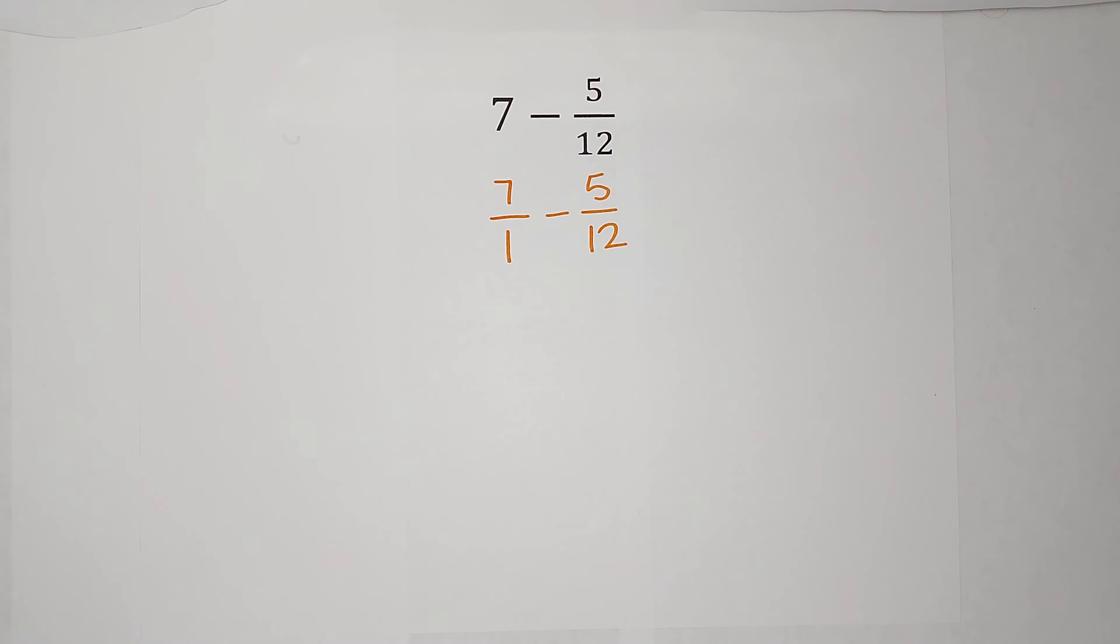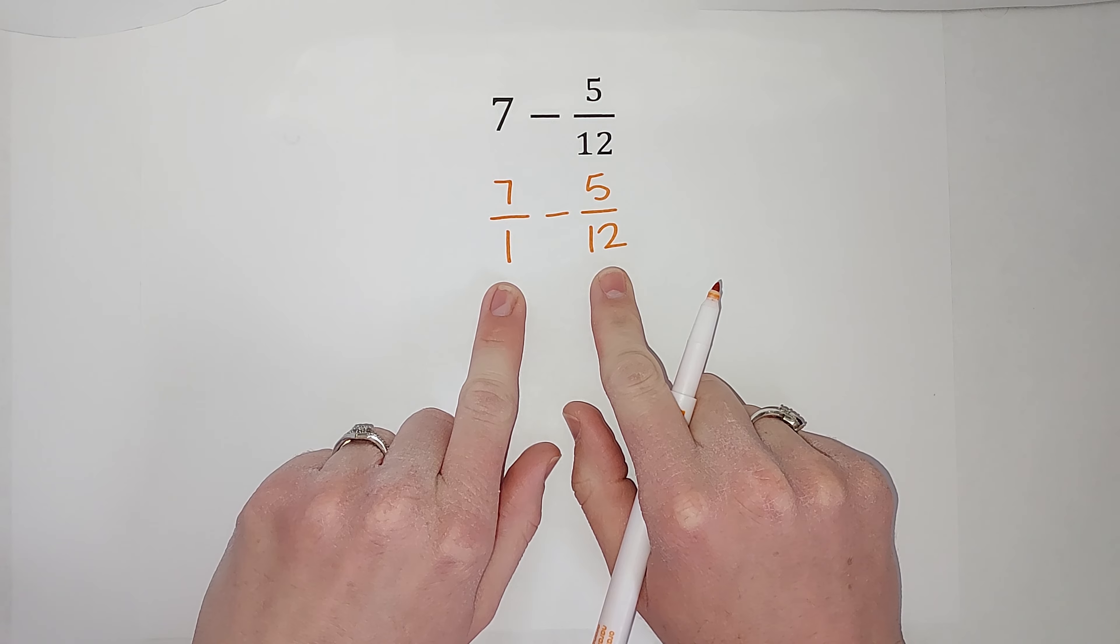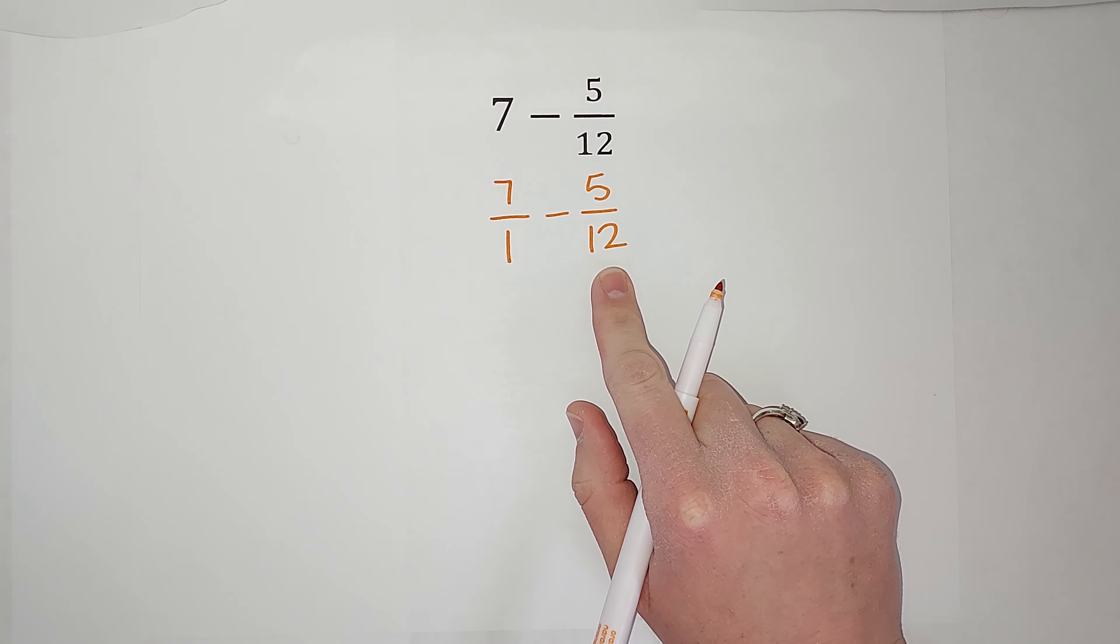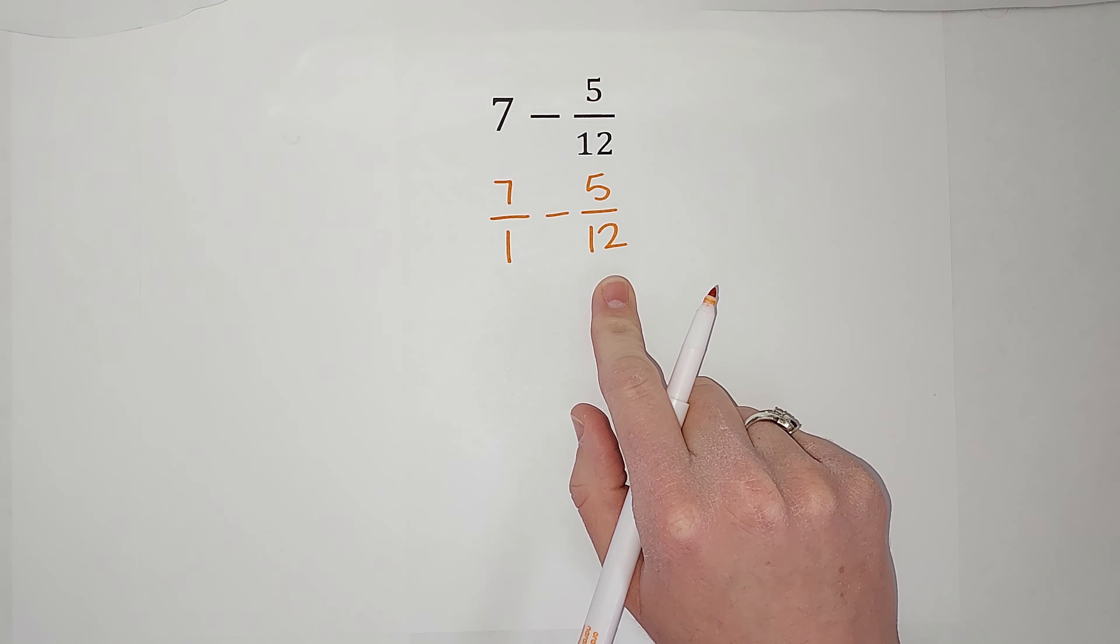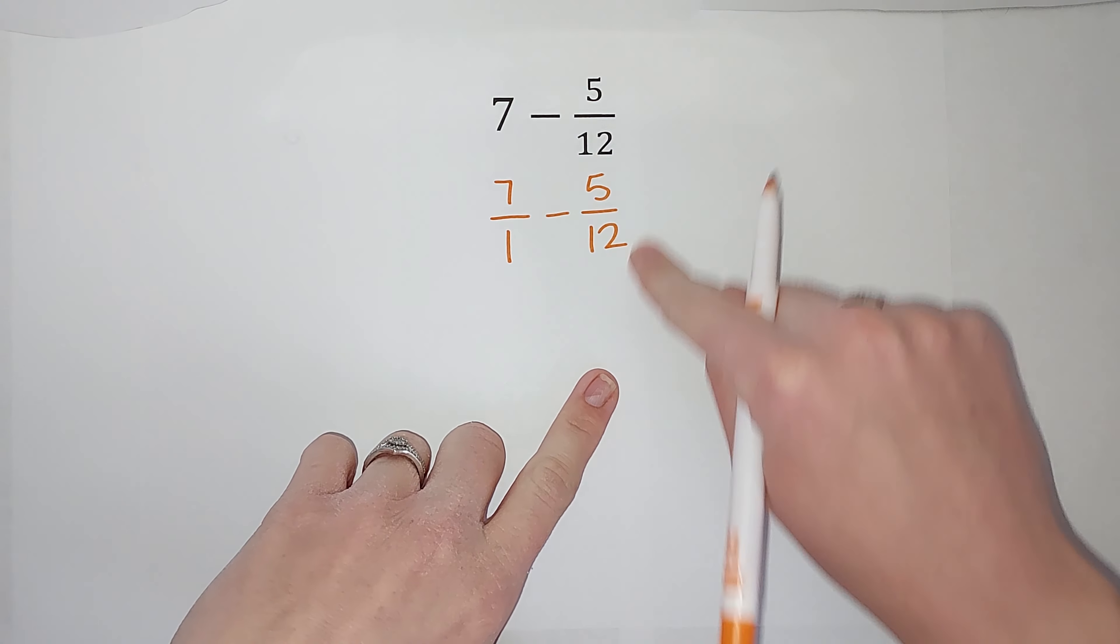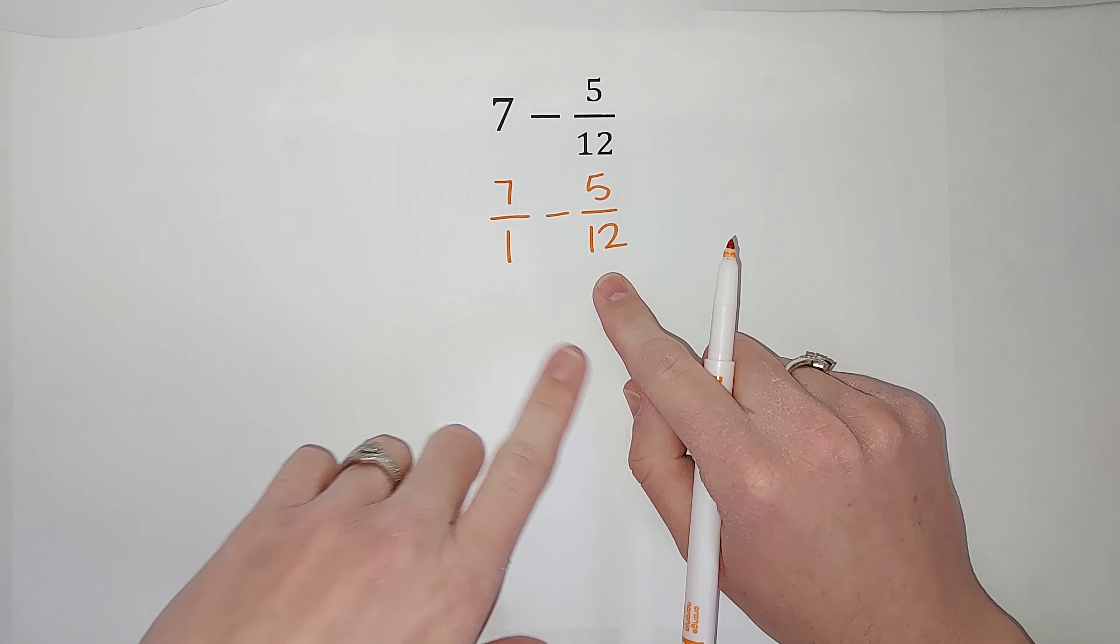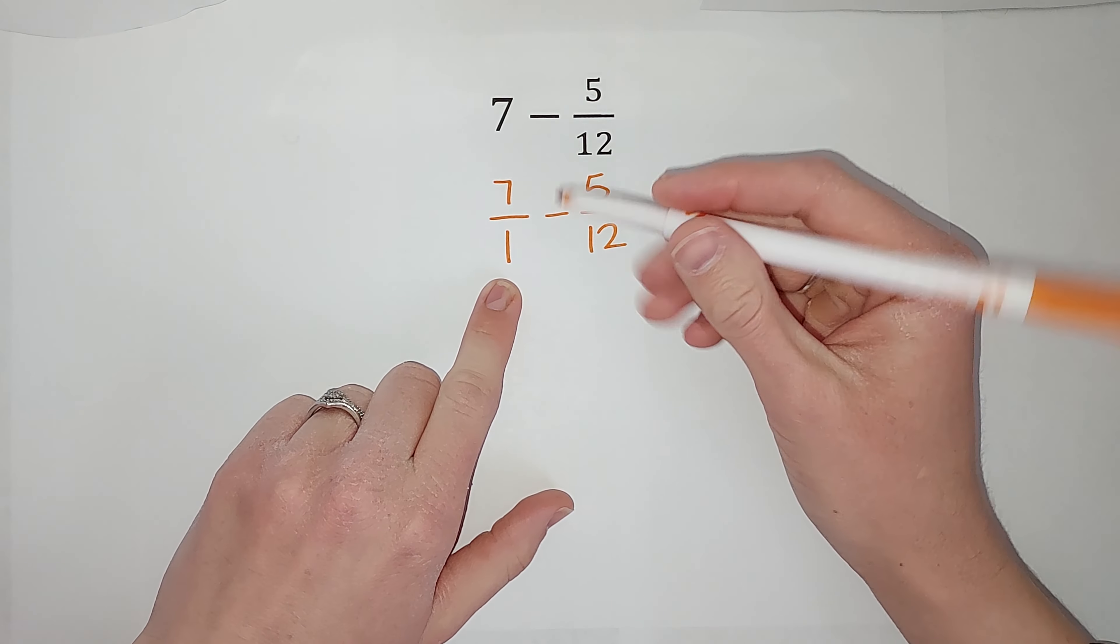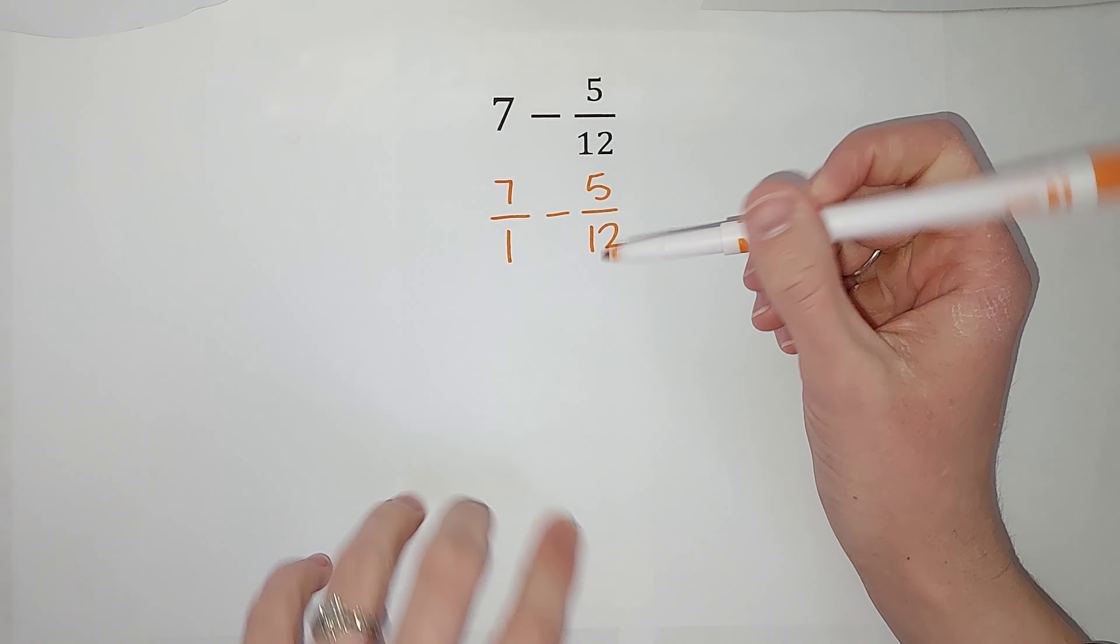So my denominators need to be the same. What's the smallest number 1 and 12 both go into? Well, 12, right? So good news, I don't have to change this fraction. But I do need to change this one for its denominator to be 12.